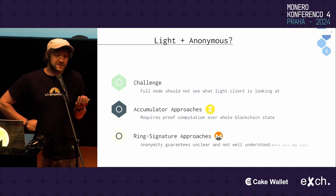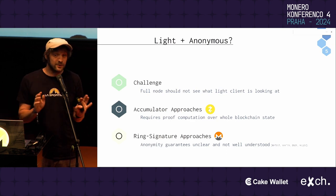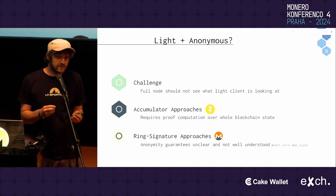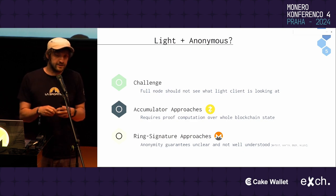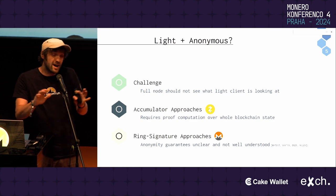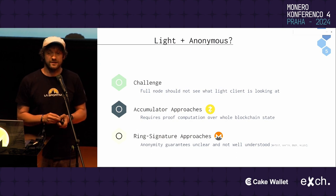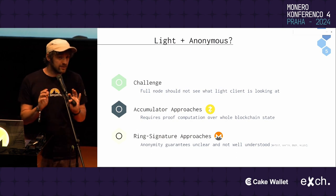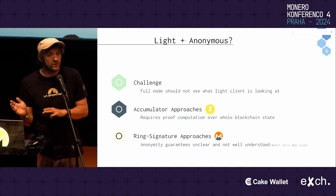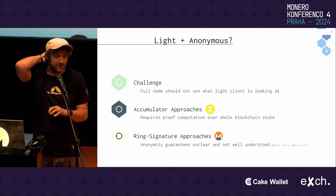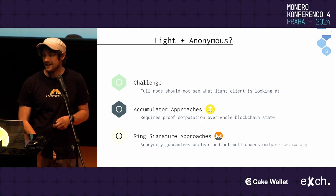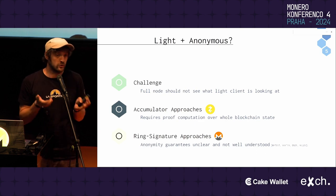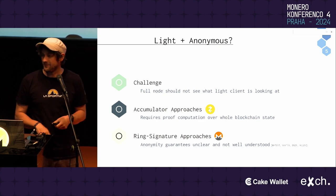There is also the ring-signature-based approach like Monero. While Monero certainly provides a non-trivial amount of privacy, there have been a bunch of recent works that studied the anonymity Monero provides from a graph perspective. It's not necessarily clear how much anonymity you actually get — clearly you get some, but how much is very much an open question and not too well understood.